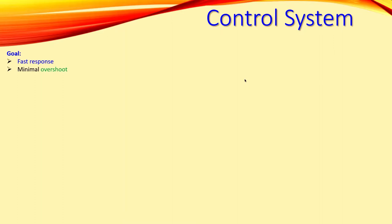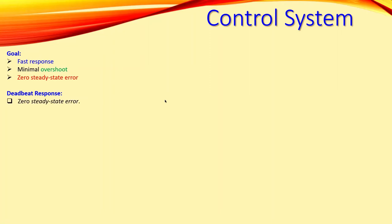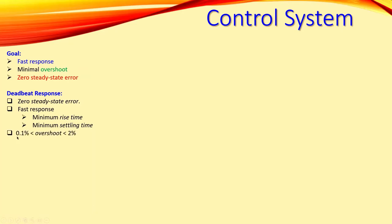The goal of your control system is that you have a fast response, that you have minimal overshoot, and that you have a zero steady state error — so the output will track the input for a step input. If you have a deadbeat response, that will provide these elements: zero steady state error, a very fast response with minimum rise time and minimum settling time. The overshoot lies between 0.1% and 2%, and you might have an undershoot lower than 2%.